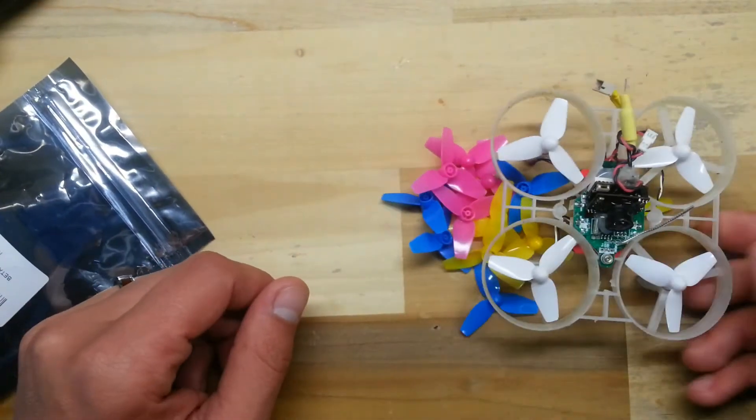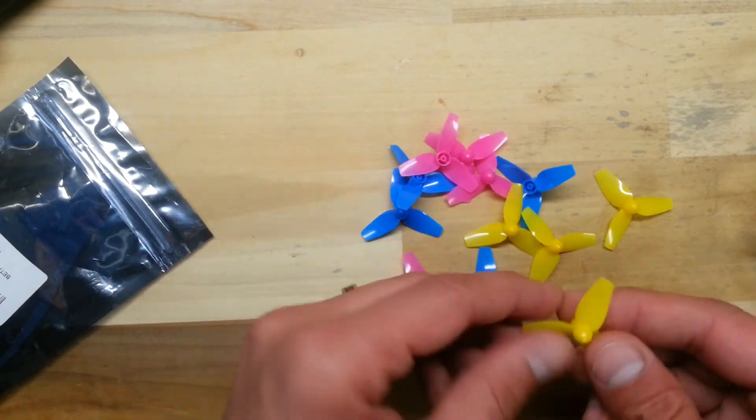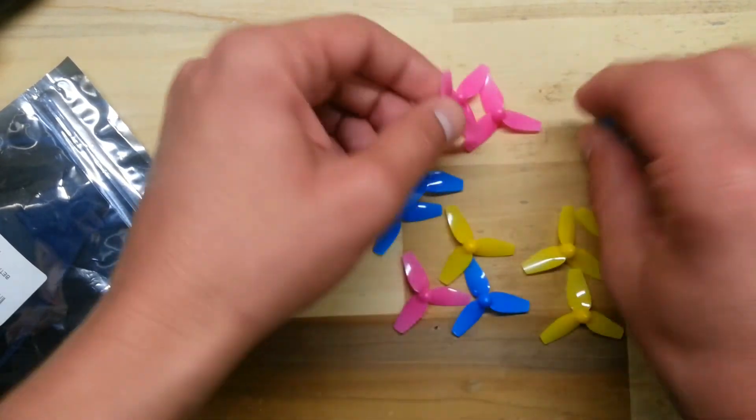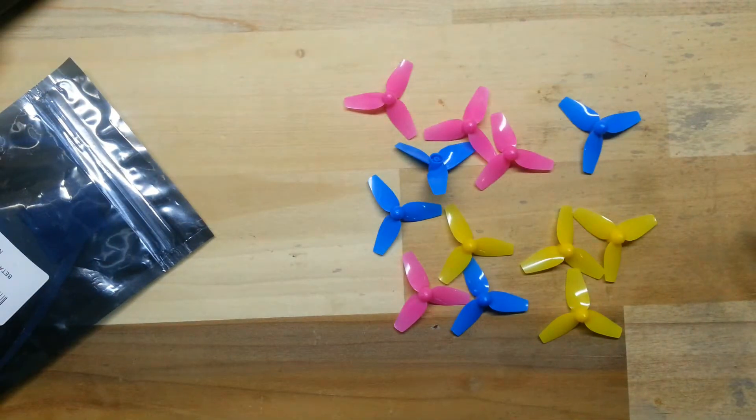You can get the white ones, blue, pink, and yellow. These props are pretty strong. I haven't had any problems with them. In fact, I haven't even broken one yet. You can see these were the original ones before I swapped out the lights.